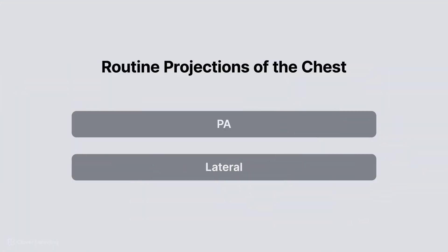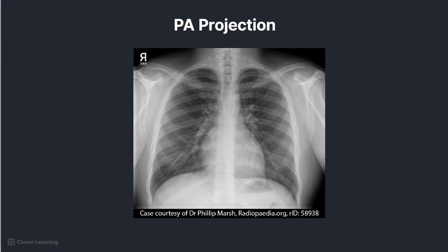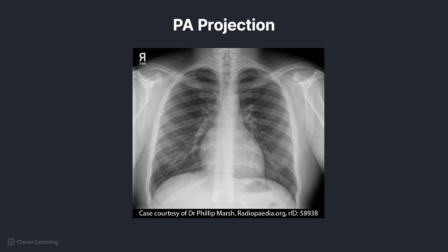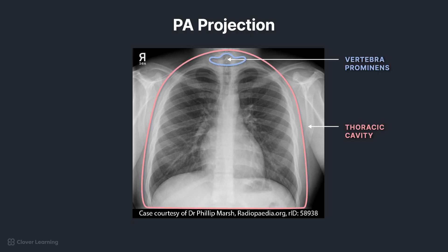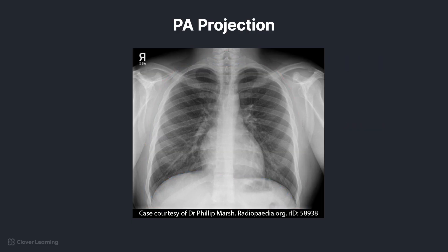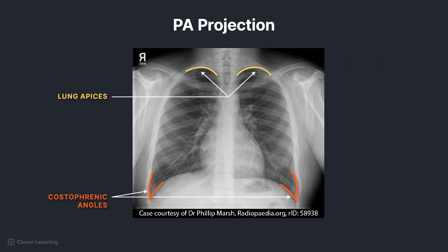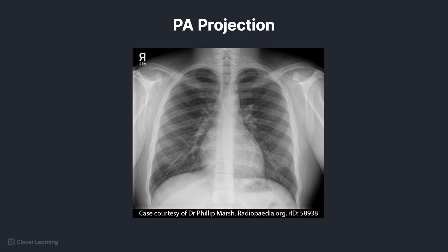The routine radiographic projections for the chest are PA and lateral. For the posteroanterior, or PA, projection, the entire thoracic cavity should be included from the vertebral prominence to below the lower rib margin. The lungs should be visible from the apices to the costophrenic angles, and the image should be taken on suspended inspiration to depress the diaphragm. Additionally, the outer skin margins on both sides should be included laterally to ensure all relevant anatomy is demonstrated.